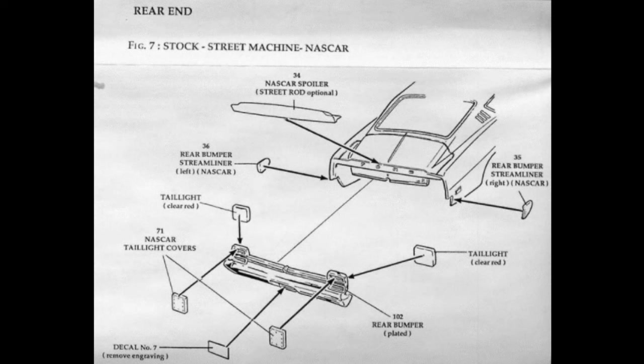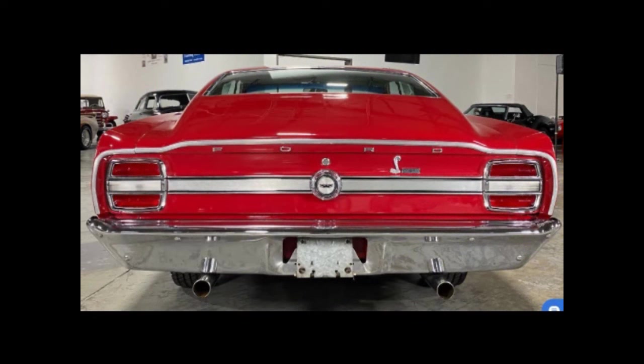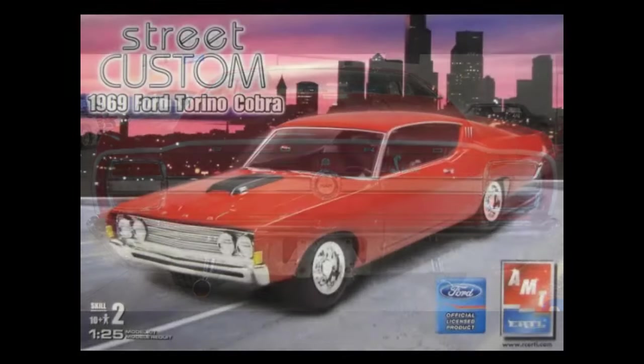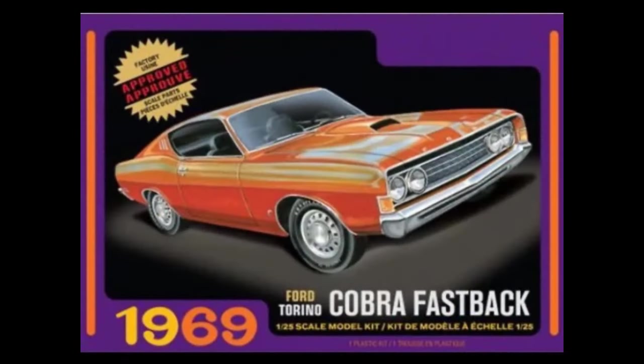The rear bumper assembly was re-engineered to include the lower portion of the rear taillight panel. Some kits, like the 2006 RC2 release, include the smooth lower panel to build an accurate Fairlane 500, Cobra, or Talladega.